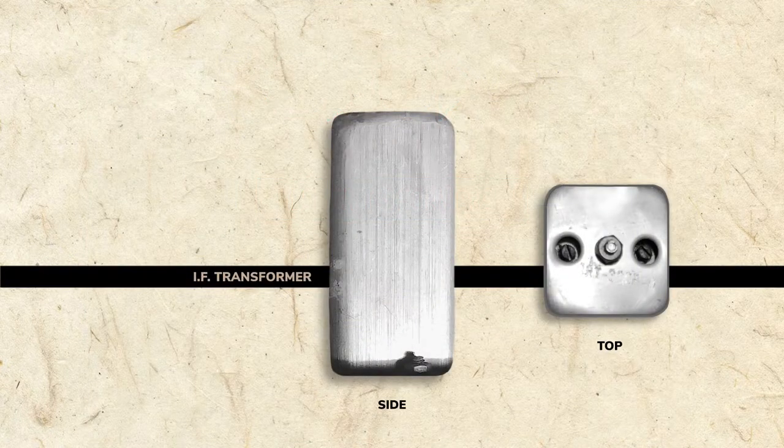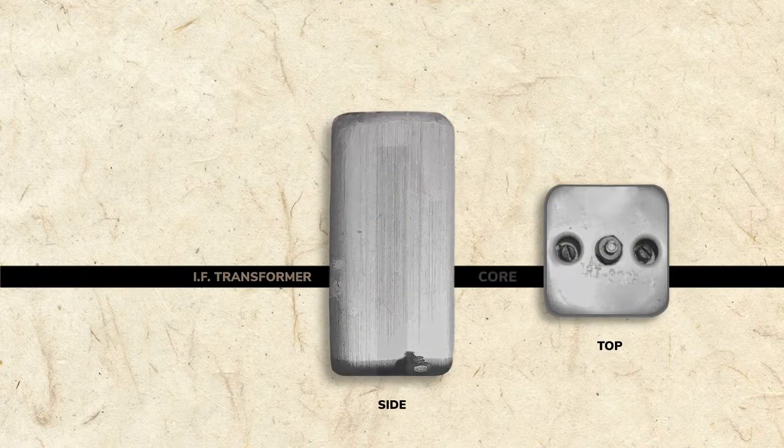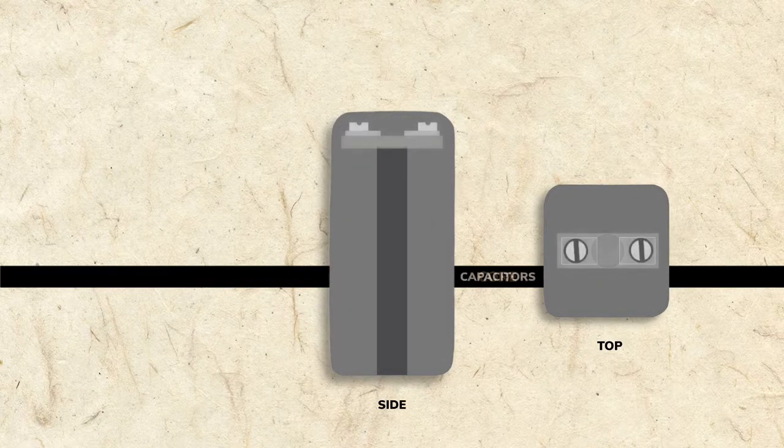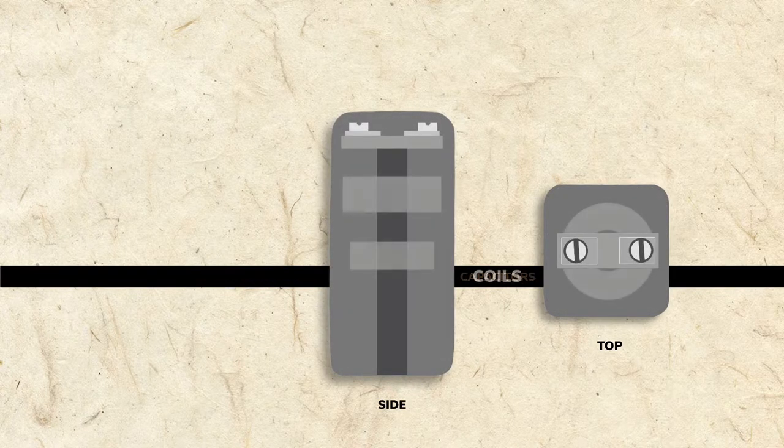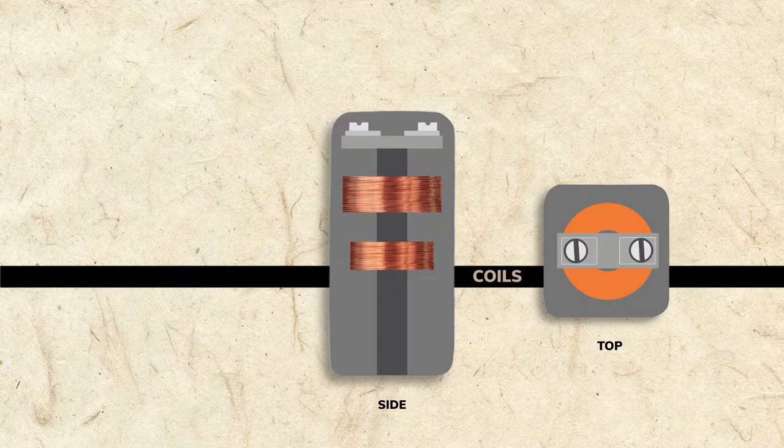Here's the first IF transformer from our antique radio. Inside is a core, capacitors, and coils. Coils are windings of very fine wire.